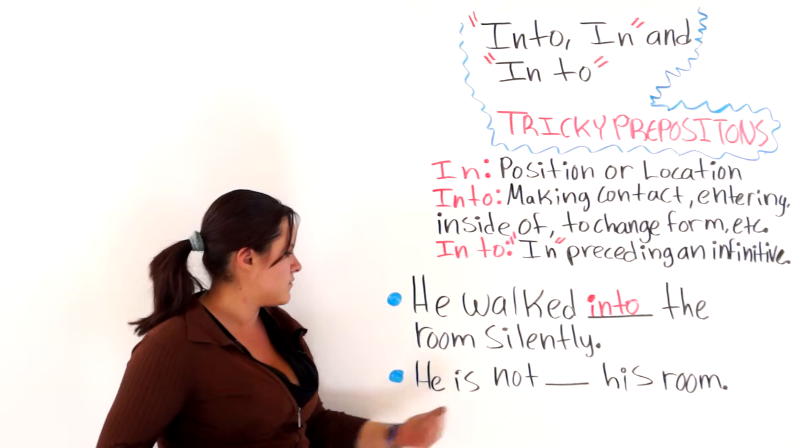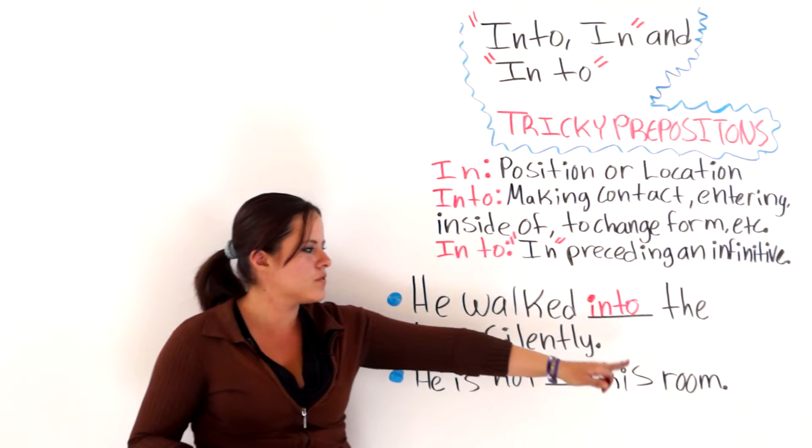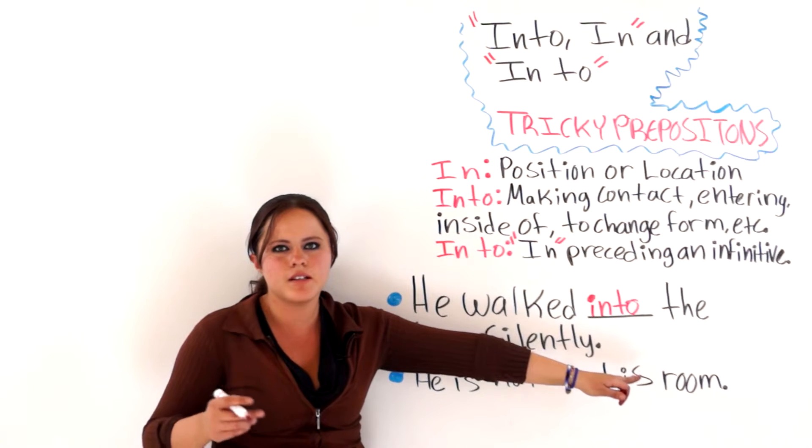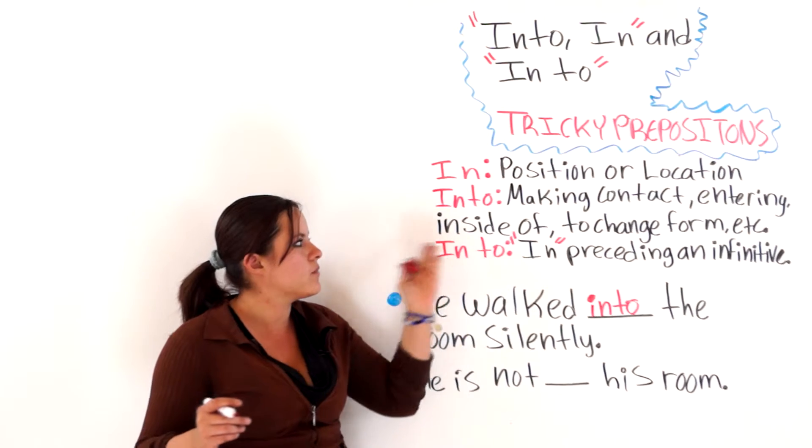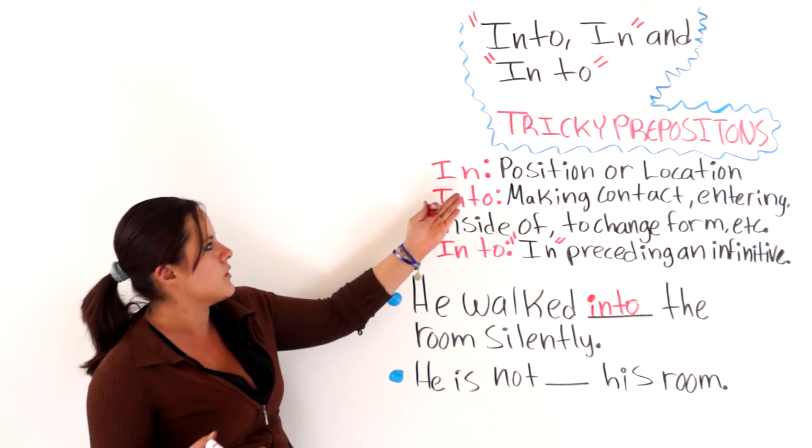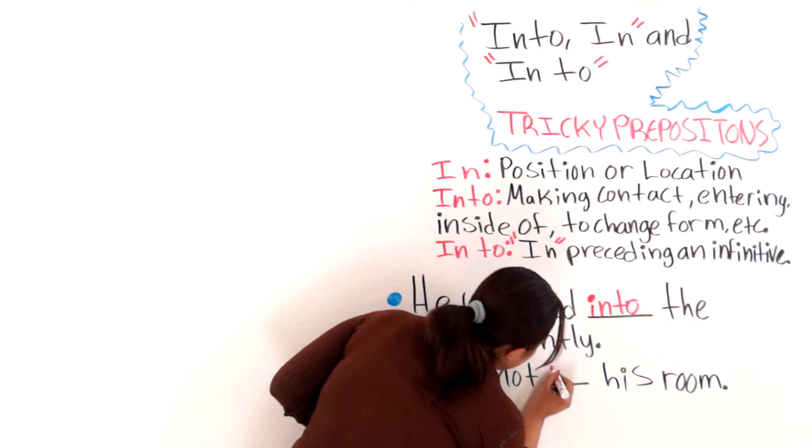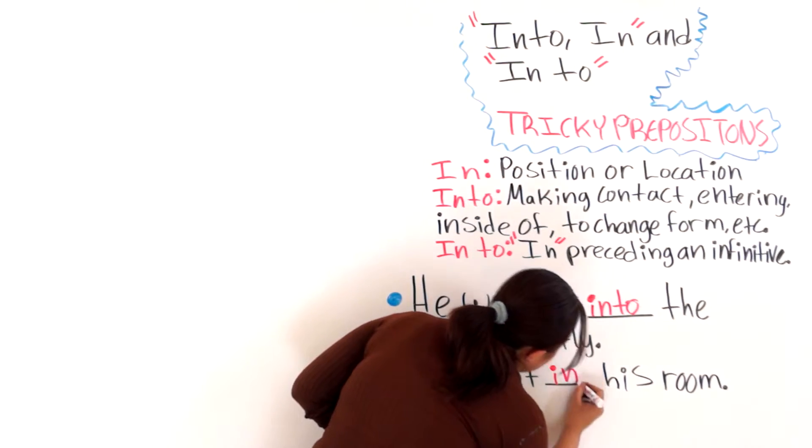And the last one says, he is NOT blank his room. His room is a location. So, we know that when we are talking about location or position, we are going to use the preposition IN. He is NOT IN his room.